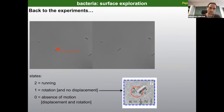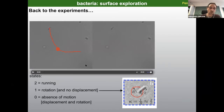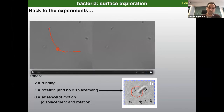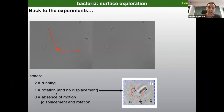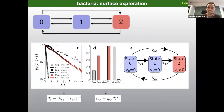The bacteria were doing something like this: the bacterium is getting tethered to the surface and performing rotation, which is quite common in experiments with bacteria tethered to the surface. That led us to define the following states: state two is running; state one is when the bacterium is tethered and rotating; and state zero means the bacterium is performing no motion and no rotation.